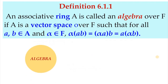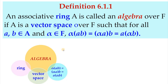First, we have the definition of algebra over F. An associative ring A is called an algebra over F if A is a vector space over F such that for all a, b in A and alpha in F, alpha times (ab) equals (alpha a) times b equals a times (alpha b). This may look like associativity but it is not the associative law, because alpha is a scalar while a and b are elements from A. Basically, for an algebra we need it to be a ring, a vector space, and to satisfy this condition.